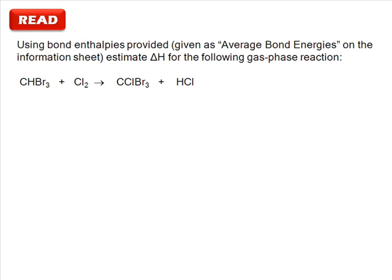Reading the question, we find that we need to use the bond enthalpies given on the information sheet to estimate the change in enthalpy for the reaction of CHBr3 with Cl2 to give CClBr3 and HCl.